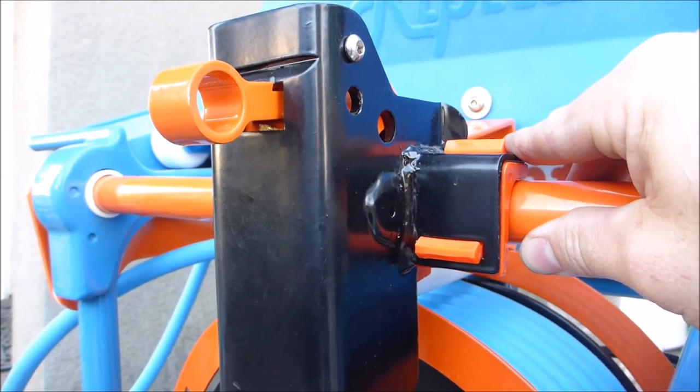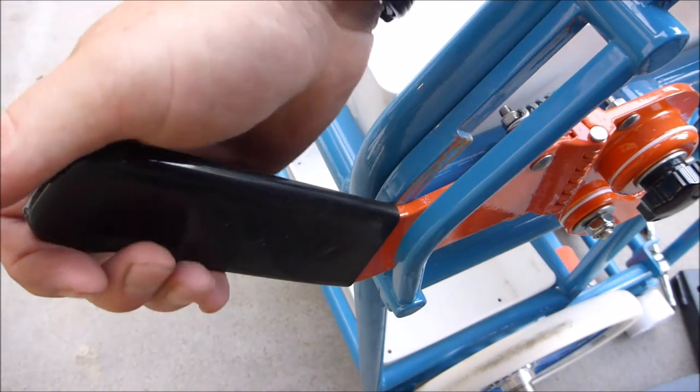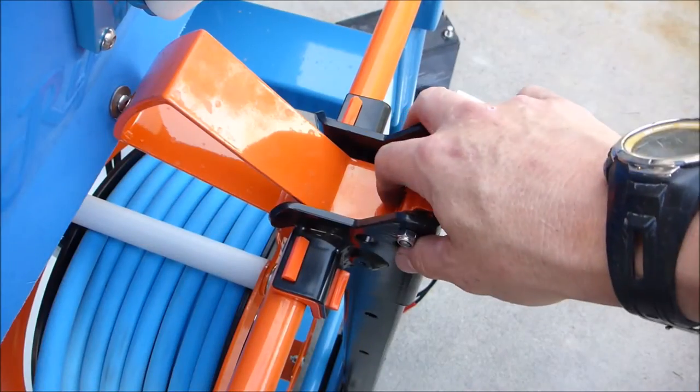You can also test it by locking it in place. You want to pull this handle up and lock it in place. You can see the front is locked on here.